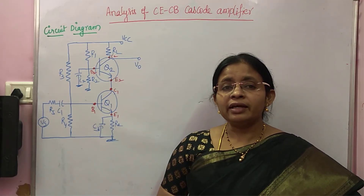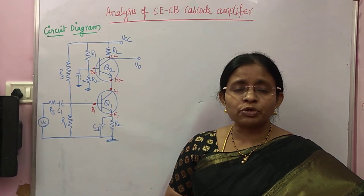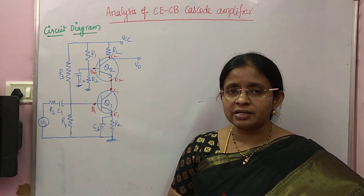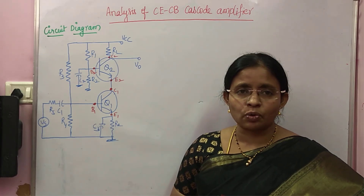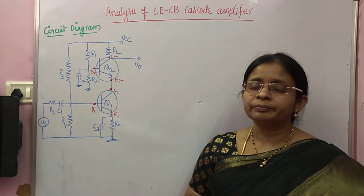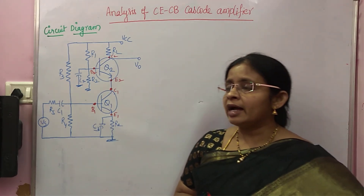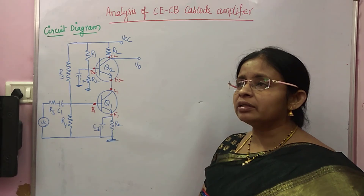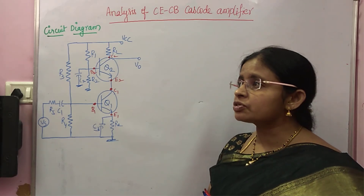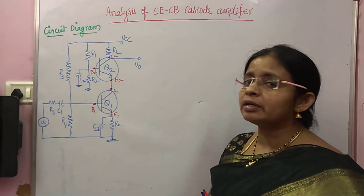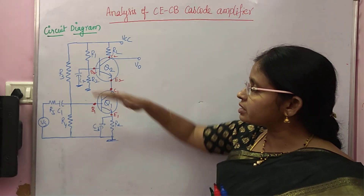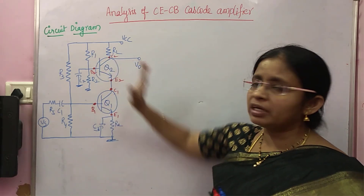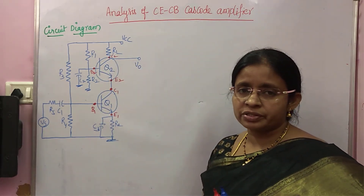Hello everyone. In this class I am going to explain the analysis of CE-CB cascode amplifier. In the cascode amplifier the transistors are not connected parallelly — the second stage is connected on top of the first stage.